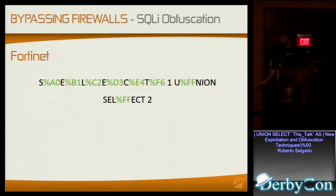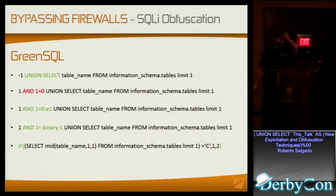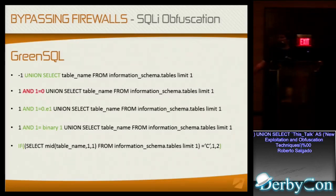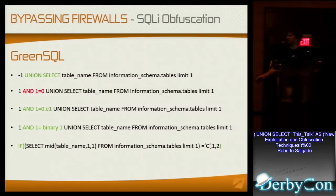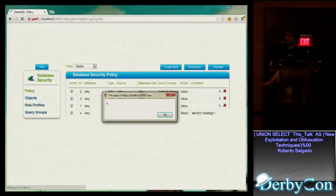Fortinet: it allows you to put any character above hex 0x80 in between keywords and just removes it, so you can put any characters in between to bypass Fortinet — no problem. GreenSQL: when I first tried to test it, I thought I hadn't set it up properly because I couldn't get it to detect my SQL injections. Then I realized it was just really bad at detecting them. Even a basic union select with no obfuscation went right through. It seems to primarily detect SQL tautology — things like 'and 1=0' — but it was simple to bypass by adding an exponent, using the binary keyword, or using an IF function. They also had a cross-site scripting vulnerability in their comment box, which is a little worrisome.